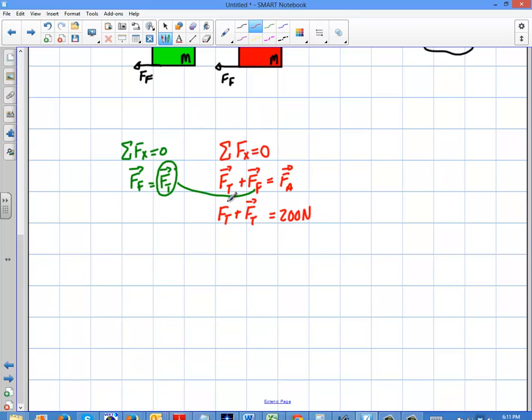They're just the same thing. Friction is the tension equals 200. So two times the force of tension equals 200 newtons.